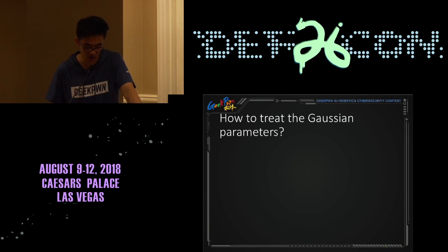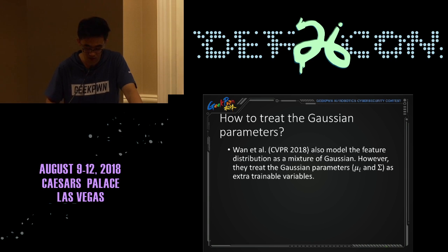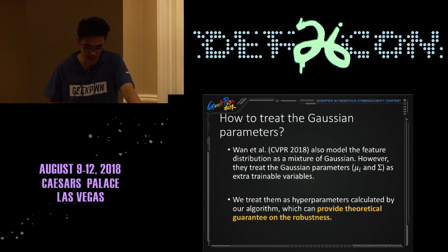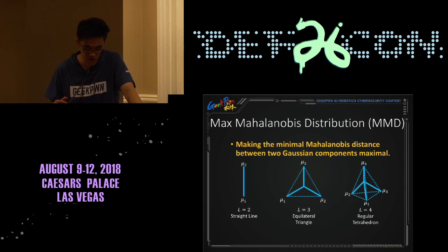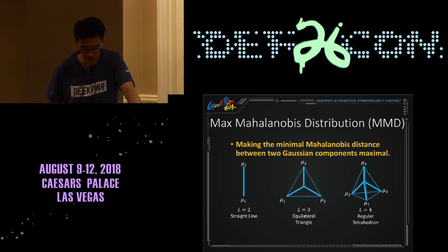A naturally raised question is how to set the Gaussian parameters. One et al. also models the feature distribution as a mixture of Gaussians, but they treat the Gaussian parameters as extra trainable variables. By contrast, we treat them as hyperparameters calculated by our algorithm, which can provide a theoretical guarantee on robustness. The induced mixture of Gaussian model is named Max-Mahalanobis-based Distribution, abbreviated to MMD. Intuitively, MMD makes the minimum Mahalanobis distance between two Gaussian components maximum. For example, samples in different classes are separated the most when the distribution is MMD. When there are three classes, the Gaussian means of MMD are the three vertices of an equilateral triangle.